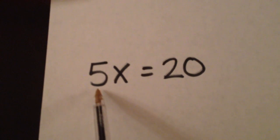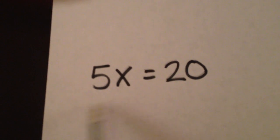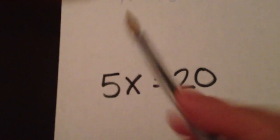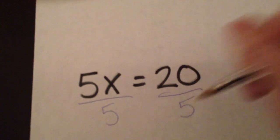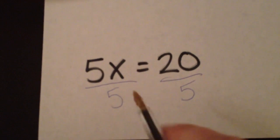Since this is multiplication, we're going to do the opposite, which is division. We're going to divide both sides by 5 and write it just like that—no division symbol, just like a fraction.